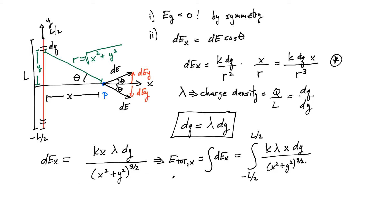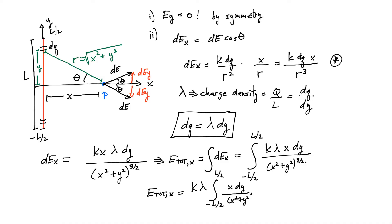To simplify further, we can take out all the constants. If you take out all the constants, you're simply going to get k lambda times the integral from minus L/2 to L/2 of x dy divided by (x squared plus y squared) to the three-halves. Actually, x is also a constant for this problem, so let's factor it out as well. Let's go see how to evaluate this term.